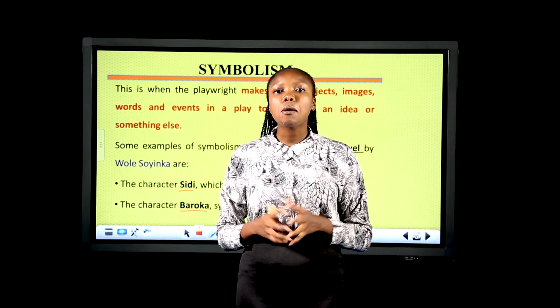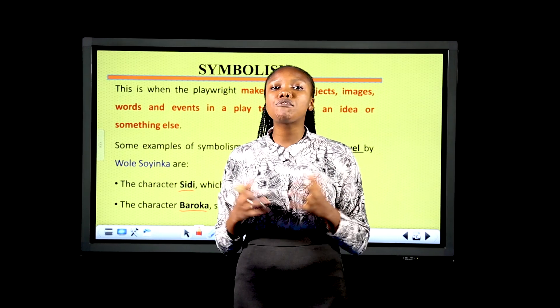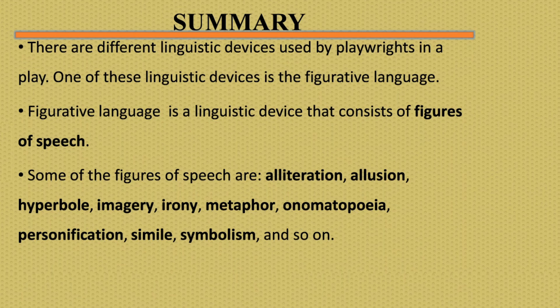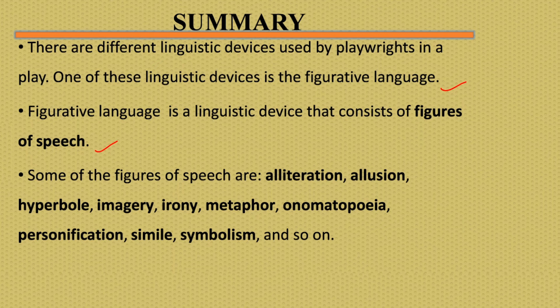Having discussed symbolism, we have come to the end of this lesson. Let's take a quick summary. We have learned that there are different linguistic devices used by playwrights, one of which is figurative language — a linguistic device that consists of figures of speech. Some of the figures of speech include alliteration, allusion, hyperbole, imagery, irony, metaphor, onomatopoeia, personification, simile, symbolism, and so on.